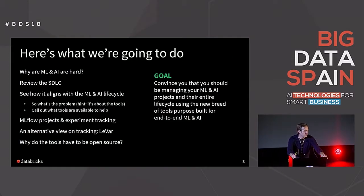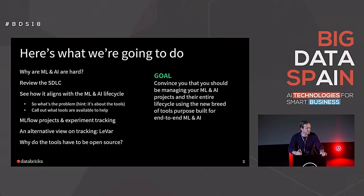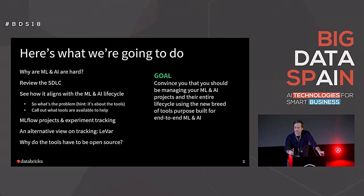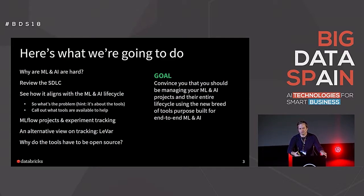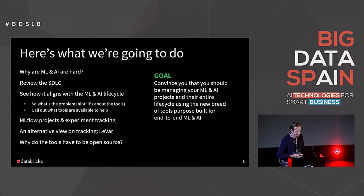Here's what we're going to do. We're going to talk a little bit about why machine learning and AI can be hard, look at a traditional software development life cycle, and see how that aligns with an ML and AI life cycle — oftentimes people think the two are pretty distinct. Then I'm also going to be looking at MLflow, digging into how MLflow projects and multi-step pipelines are set up and how those appear in experiment tracking. I'll also show an alternative project called LeVar, and mention why it's important that these tools should be in open source. At the end, I just want you to go out there and start using some of the tools available to make your projects more efficient.